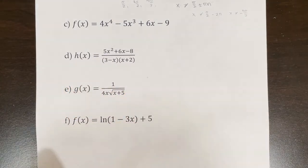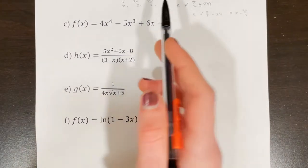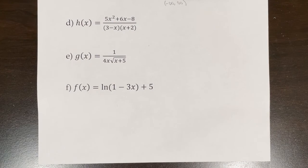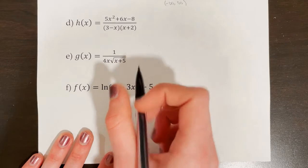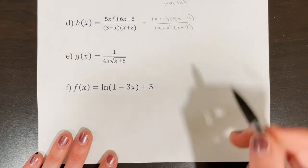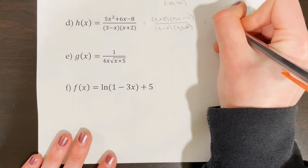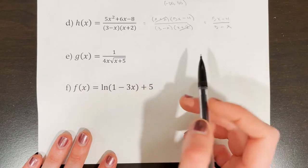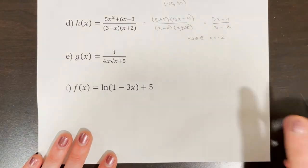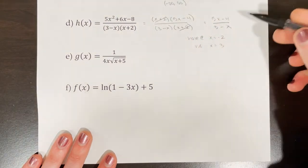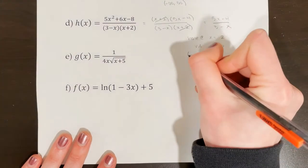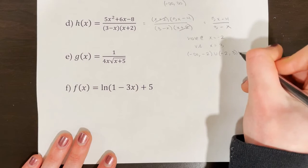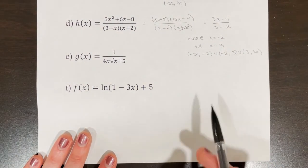For part c, we have a polynomial function. Polynomial functions have a domain of all real numbers, so the function is continuous from negative infinity to infinity. For part d, we have a rational function. We factor the numerator, cancel the common factor x plus 2, and are left with 5x minus 4 over 3 minus x. This gives a hole at x equals negative 2 and a vertical asymptote at x equals 3. So the domain — and the interval on which the function is continuous — is negative infinity to negative 2, union negative 2 to 3, union 3 to infinity.